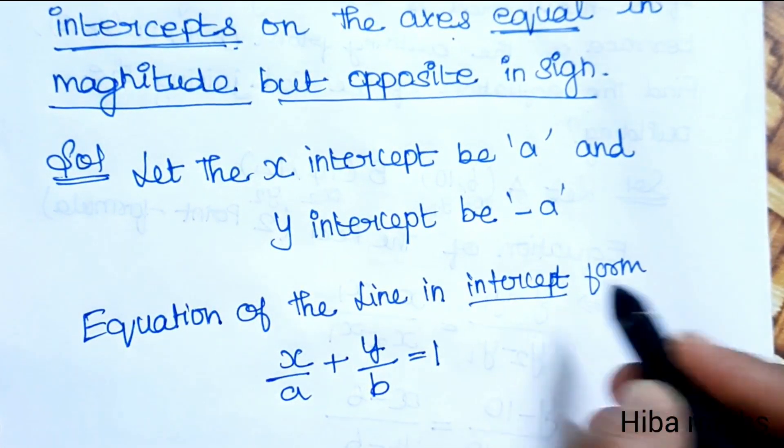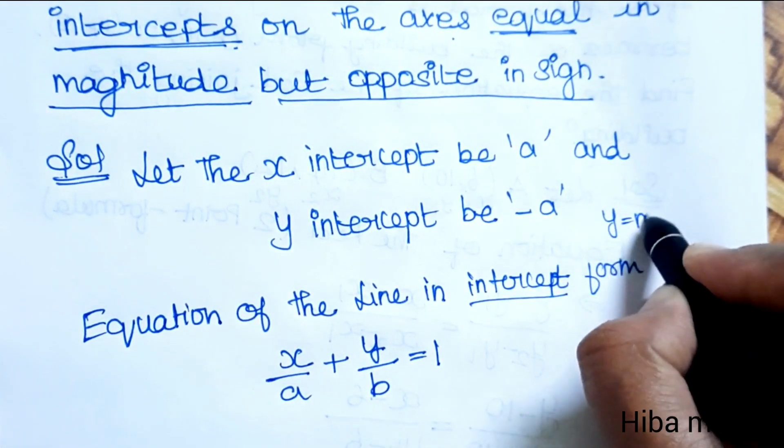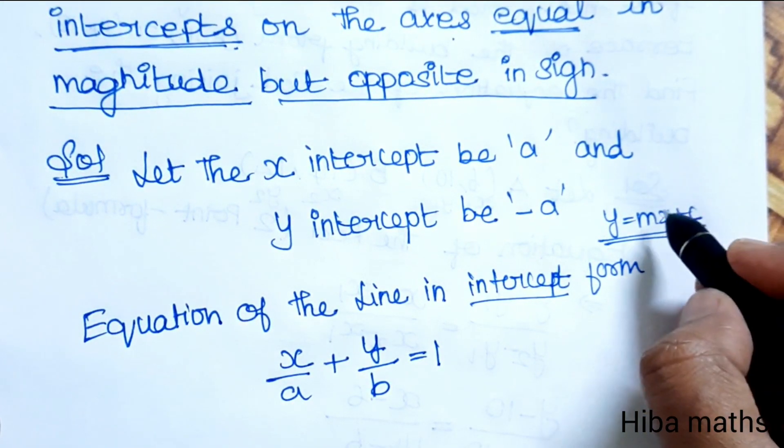Some students get confused with y = mx + c. This is the intercept form, but that is the slope form. These are different formulas.